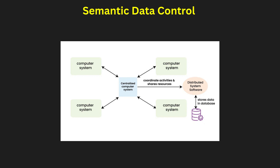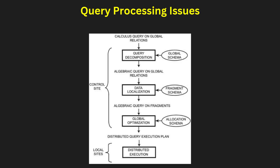Efficient query processing in a distributed DBMS is essential for reducing response time and optimizing performance. Objectives include minimizing data transfer, optimizing response time, and balancing workload. Query processing involves layers: query decomposition, localization, optimization, and execution. Query decomposition breaks complex queries into simpler sub-queries for efficient execution. Localization ensures that data fragments required for a query are retrieved efficiently.